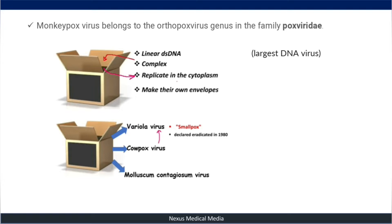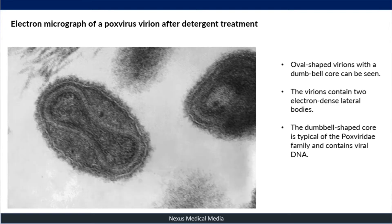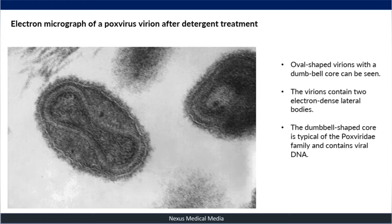In this video we'll discuss the fourth virus in the Poxviridae family: the monkeypox virus. This is the electron microscope image of the monkeypox virus — it looks like a dumbbell. The dense lateral bodies are visible, and this dumbbell-shaped core is typical for the Poxviridae family and contains the viral DNA.